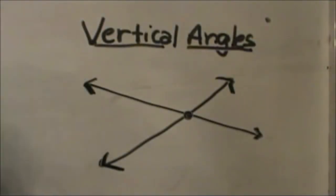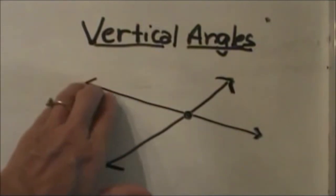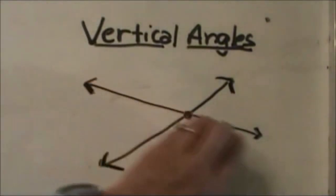Today we're going to talk about vertical angles. Vertical angles are angles that are across the street from each other, so you always look at vertical angles in relation to two lines.